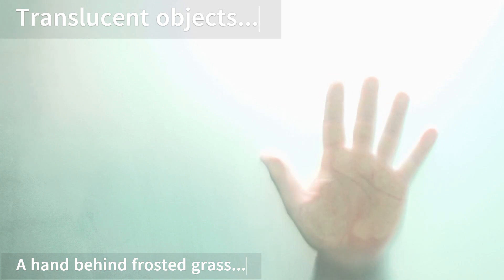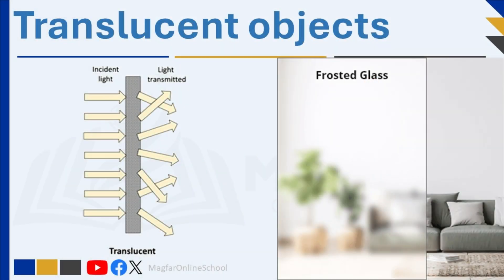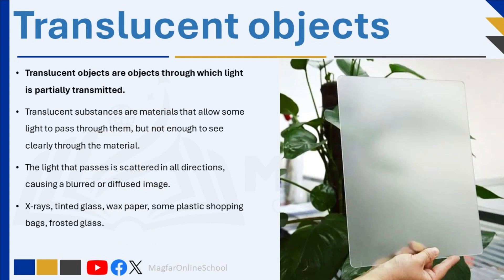Let us move on and talk about translucent objects. Translucent objects are objects through which light is partially transmitted. Translucent substances allow some light to pass through them, but not enough to see clearly through the material. The light that passes is scattered in all directions, causing a blurred or diffused image, because the microscopic structures within the material spread the light, making the object appear blurry or cloudy.